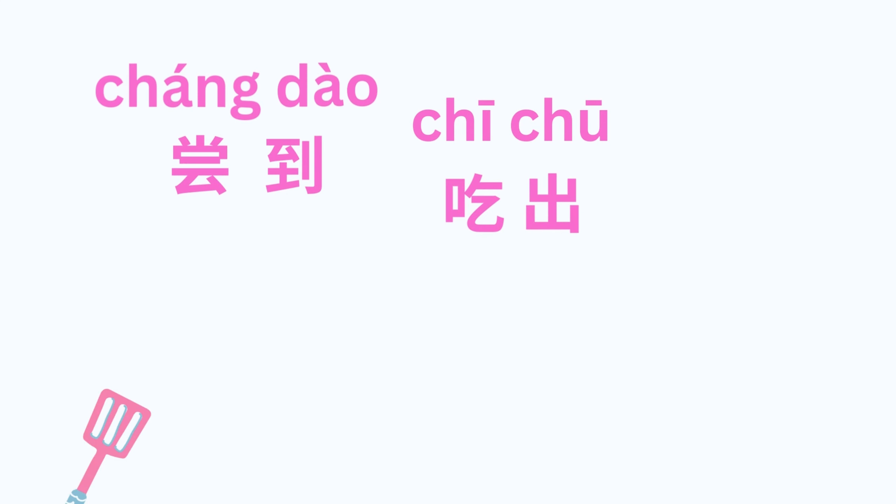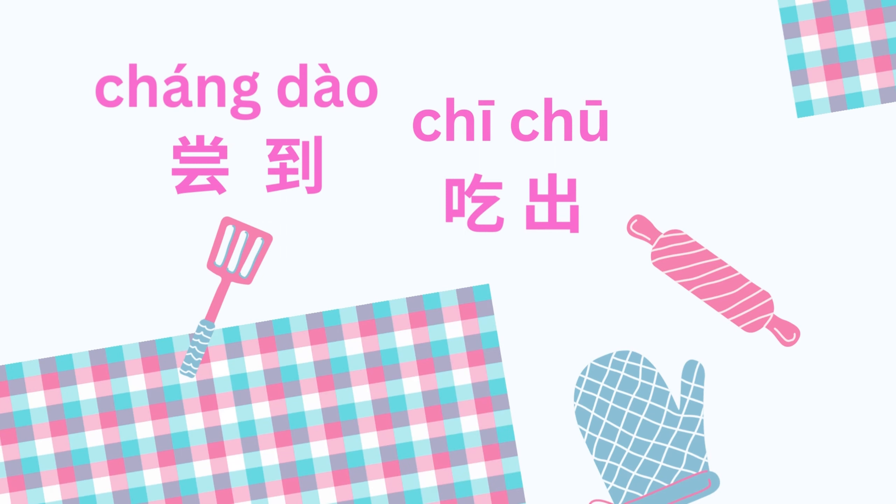And then the last one is taste. If you want to say taste something, you can say 尝到 or 吃出。 吃 means eat, 出 means out. You eat out something means you taste it. For example,